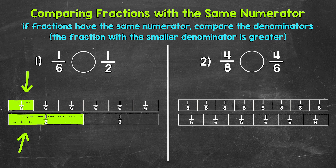So again, if we have fractions with the same numerator, the fraction with the smaller denominator is greater — those equal parts of the whole are bigger, so we have more of the whole. Even though we have one part shaded in for each fraction strip, one-half is greater. The comparison symbol always opens up towards whatever is greater, so we read this from left to right as: one-sixth is less than one-half.